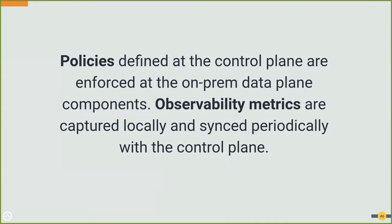In a hybrid system, policies are still defined in the control plane and the execution is abstracted with runtimes. For observability, when fully on the cloud the observability metrics were synced directly with the control plane, but in a hybrid situation they are first captured locally and then synced periodically. Still, the 360-degree view of both business and operations can be maintained. If you want to gain the advantages of cloud-nativeness on-prem, it's advisable to use a container orchestration system like Kubernetes even in your private data center.